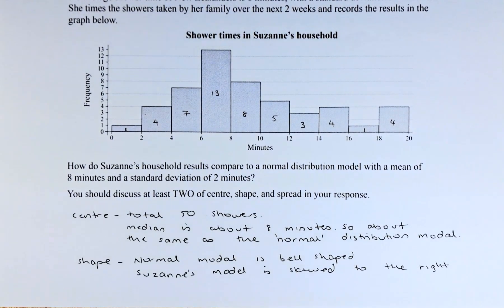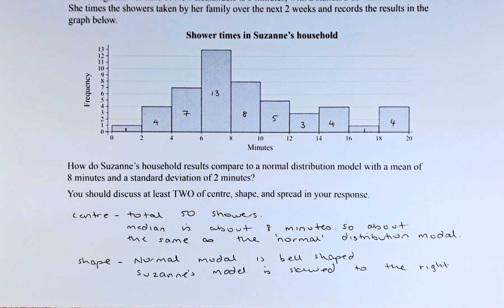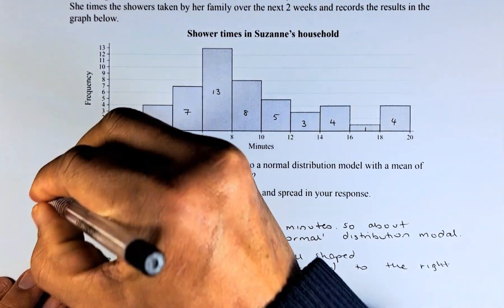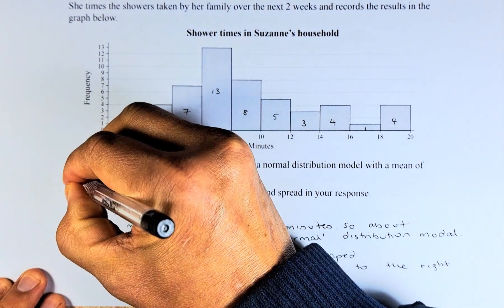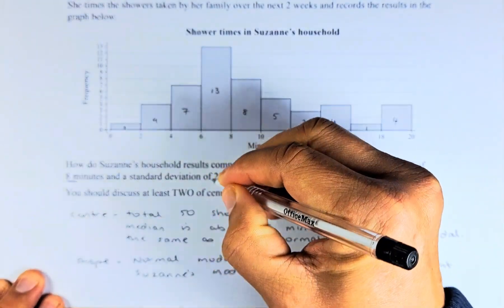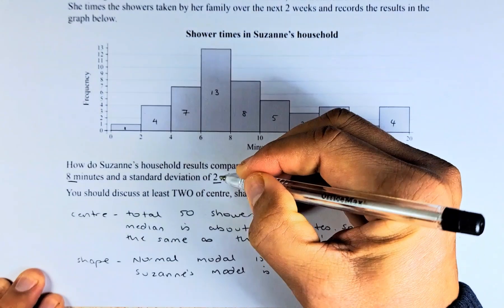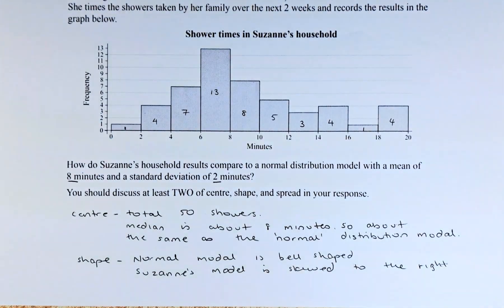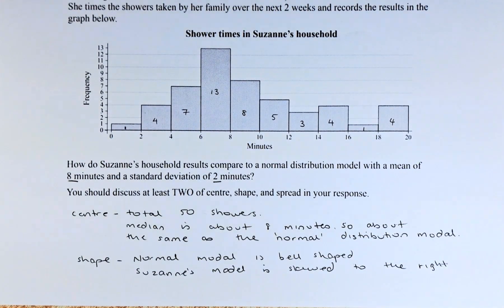How do Suzanne's household results compare to the normal distribution model with a mean of 8 minutes and standard deviation of 2? You should discuss at least two of the shape, center, or spread in your response.